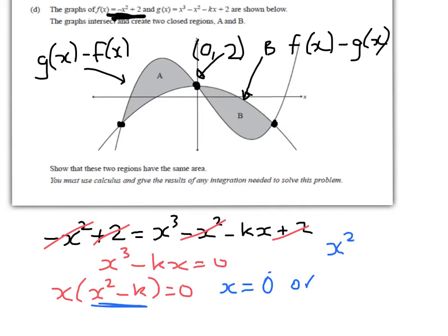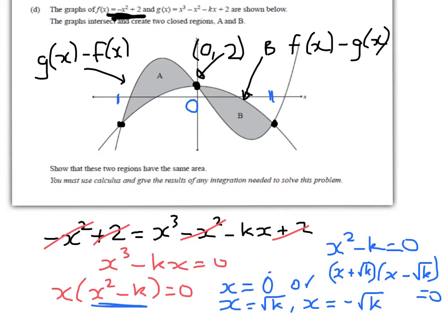Looking at x² - k = 0, we get x + √k times x - √k = 0. So the three points are 0, which we already knew, or x = √k up here, and x = -√k down here. So we're asked to show that regions A and B have the same area.